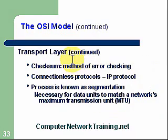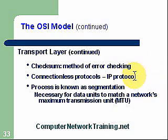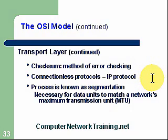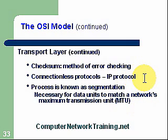Checksum is a method for error correcting. There's a little algorithm — a number derived from the data — to determine that the data has not changed. If it has changed, then we need to resend a new packet. The connectionless protocols — an example is the IP protocol — are like sending mail: we don't know if anybody receives it. It's not like TCP where we're actually sending data and need to verify that each packet arrived safely without errors. So we have a connectionless protocol, IP, and then a connection-oriented protocol, TCP.